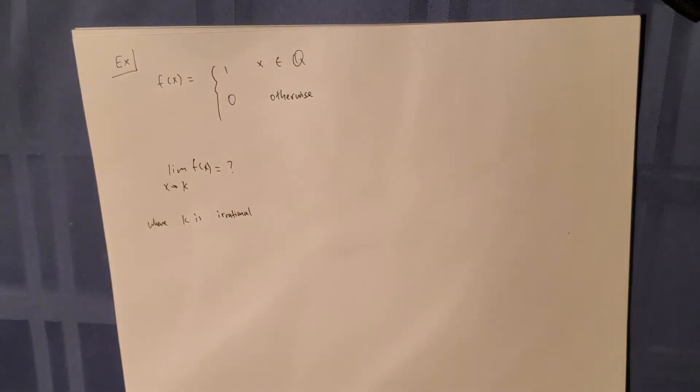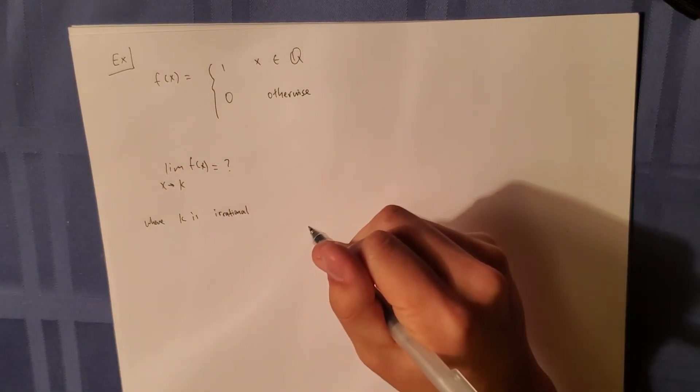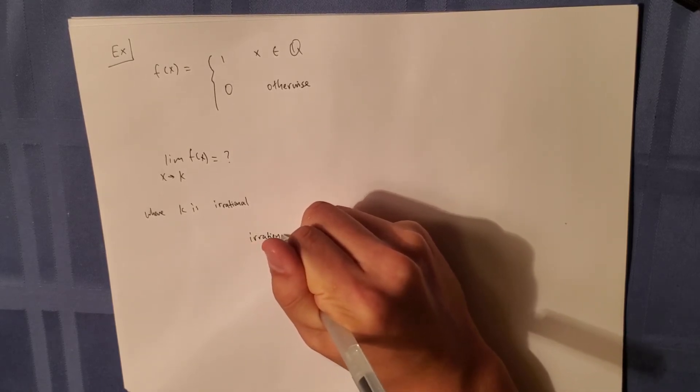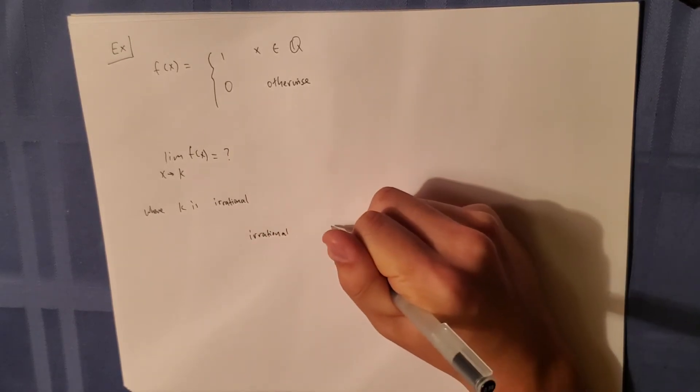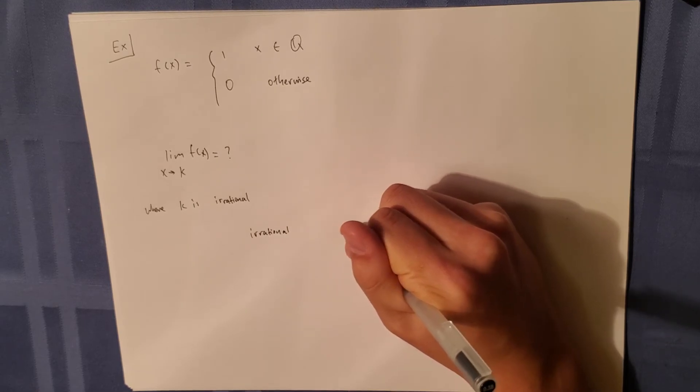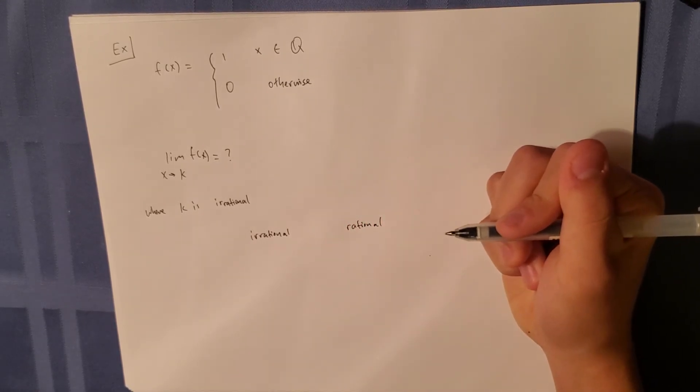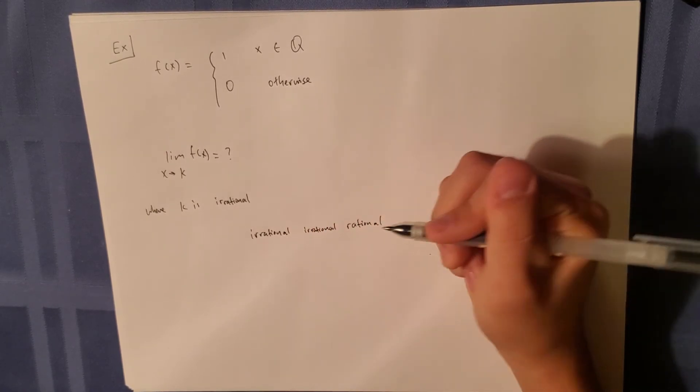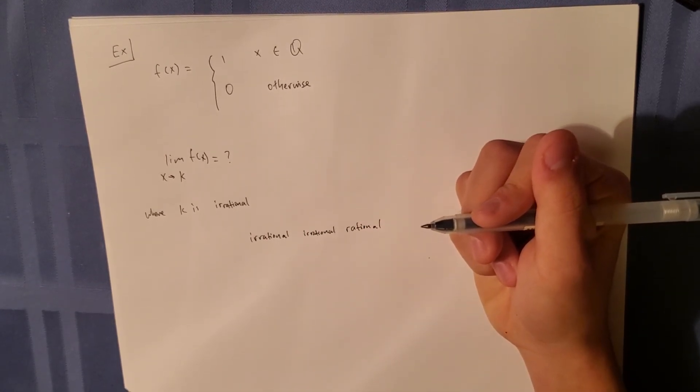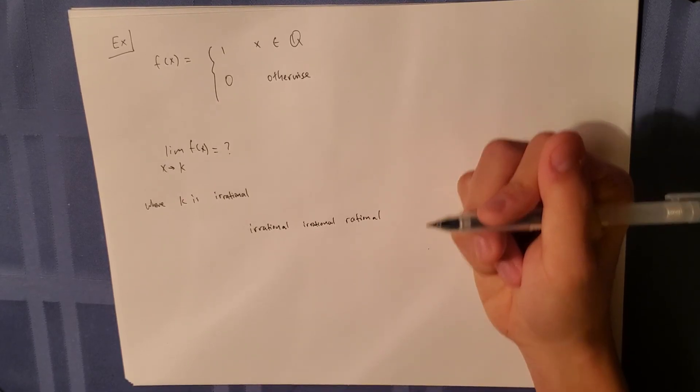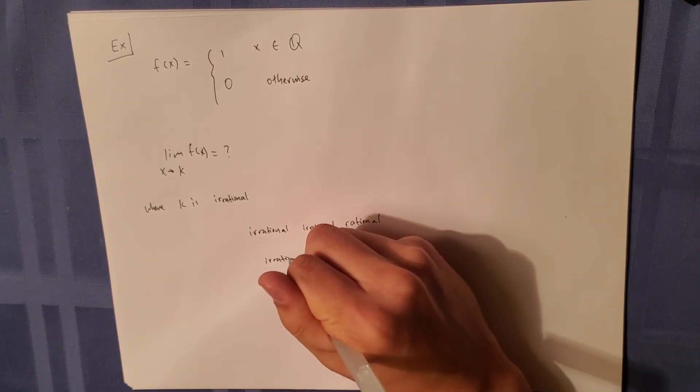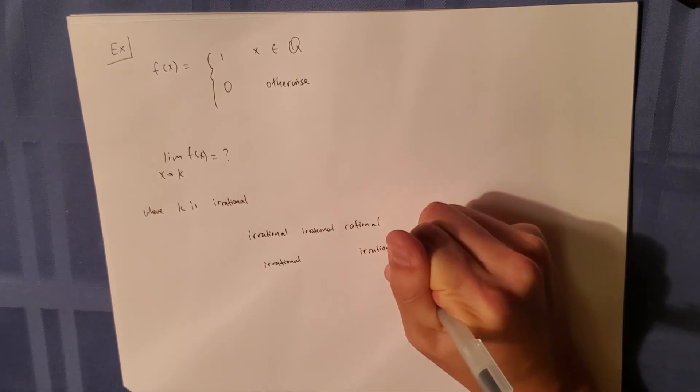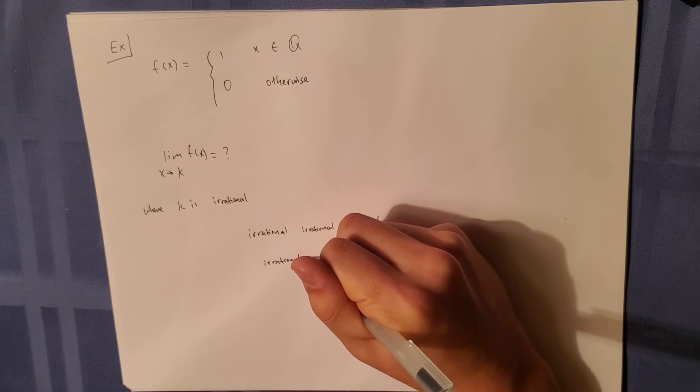we know that between every irrational and rational there must lie an irrational. However, between every irrational and irrational there must lie also irrational.